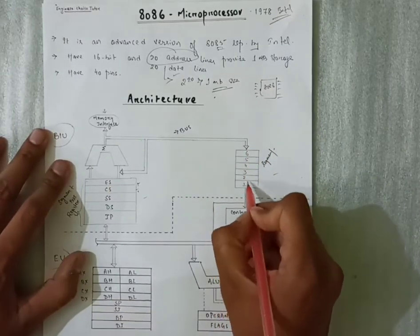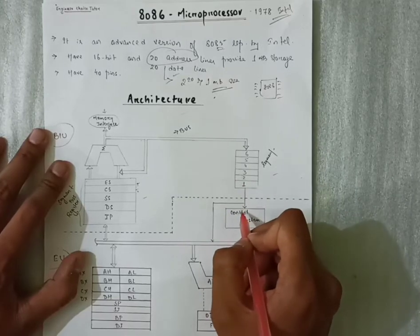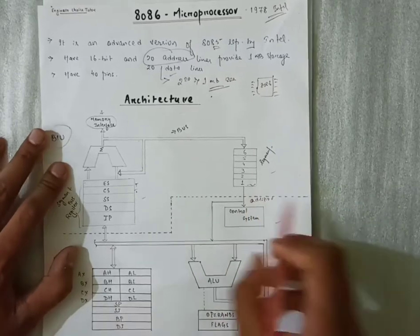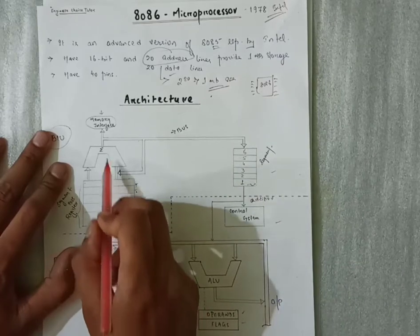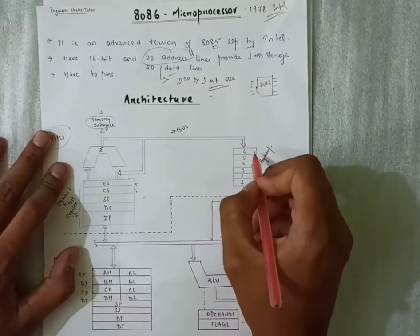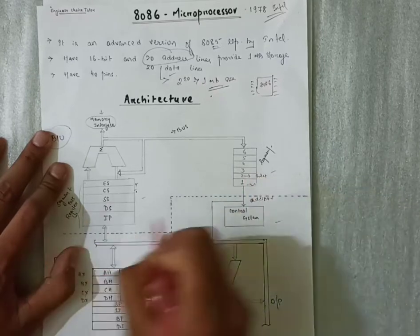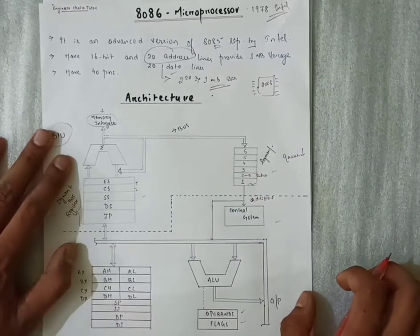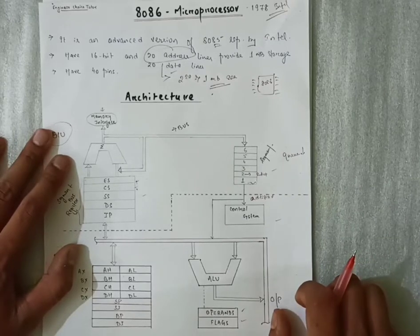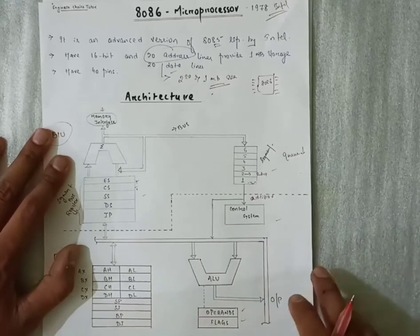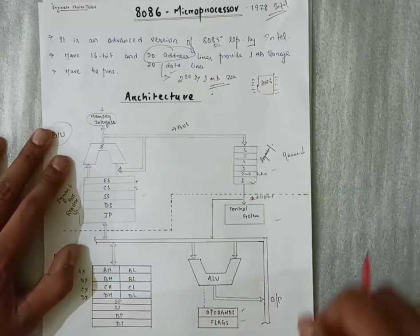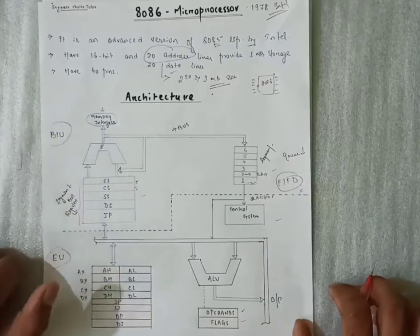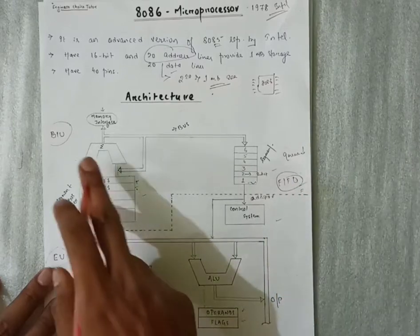Whenever we perform any task, one task is going on — controlled by the control system — some operation like addition is going on first. Then at the same time, the next instruction for subtraction is also sent. In queue format, all instructions will stand by, just like a reservation counter — one by one in the queue. They are already present and will not wait; they will come in the queue and be executed one by one in a First In First Out method. This is the function of our BIU unit.